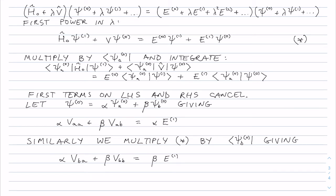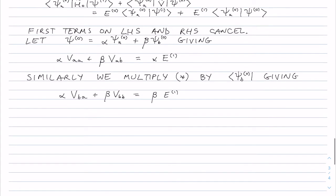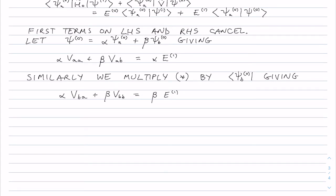This time this will be alpha V_ba plus beta V_bb equals beta times E1. So if we look at these two equations that we've just written down we can collect them into an eigenvalue problem.